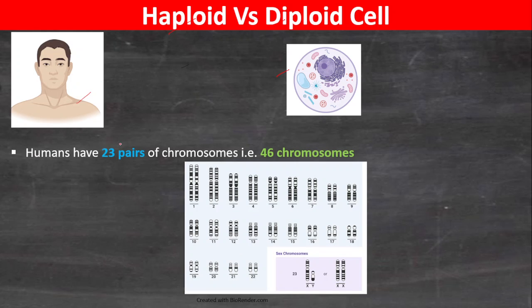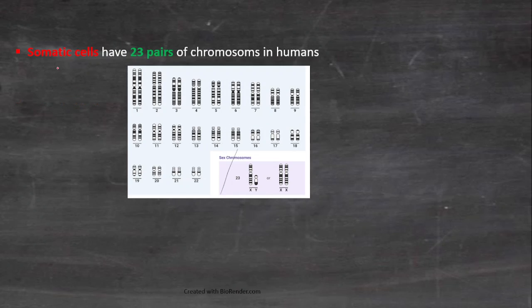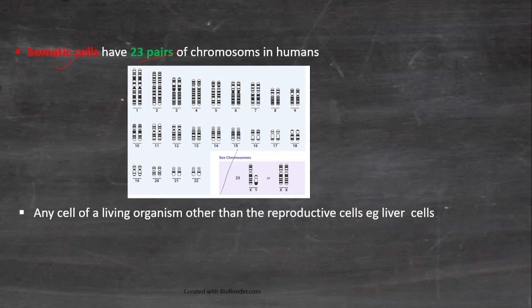In humans, we have 23 pairs of chromosomes — that is, 46 chromosomes in total, as shown in this picture. Human cells, specifically somatic cells, have 23 pairs of chromosomes. Somatic cells are any cell of a living organism other than the reproductive cells. For example, liver cells are examples of somatic cells.